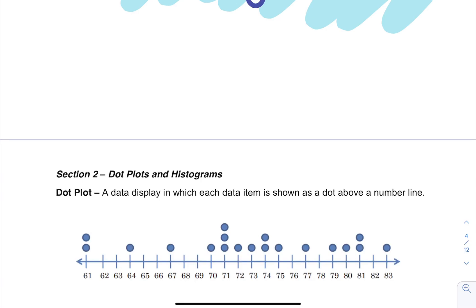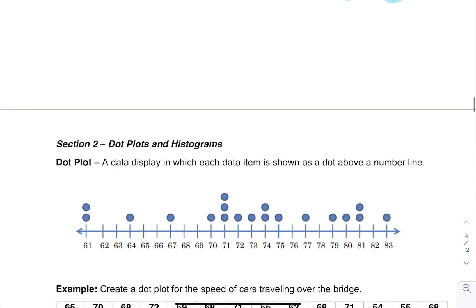Above a number line, so each of these represent one. So there's one person with 61 and there's another with 61. Maybe this is scores on a test, and then there's three people that have 71, so you get to see each individual data point displayed.